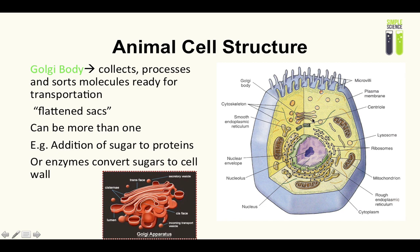There can be more than one in an animal cell, but generally you'll just come across one during your A-level. It's constantly being formed at one end of the ER and broken down again on the other end.